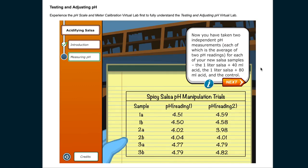Now you have taken two independent pH measurements, each of which is the average of 2 pH readings for each of your new salsa samples: the 1 liter salsa plus 40 milliliters acid, the 1 liter salsa plus 80 milliliters acid, and the control.